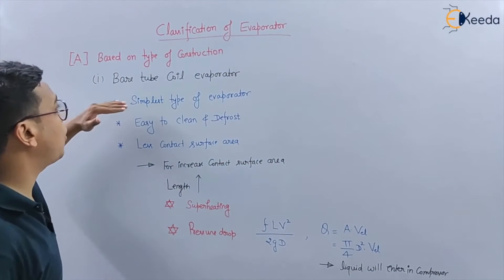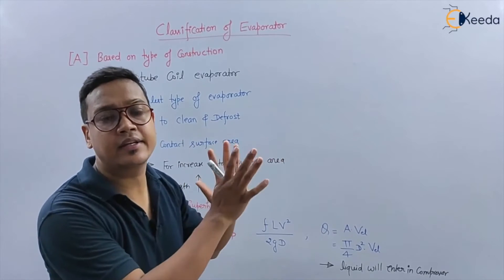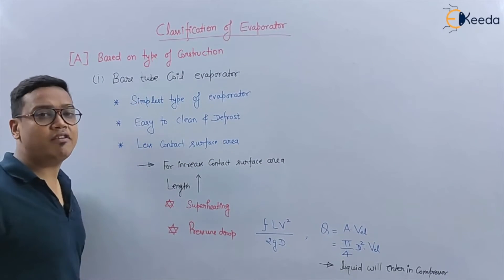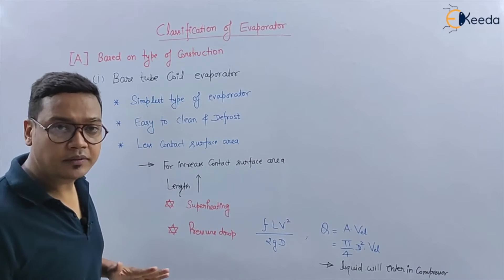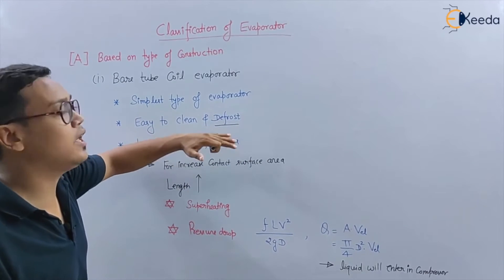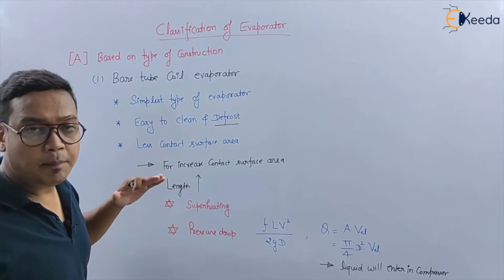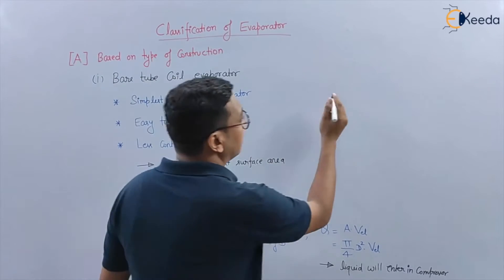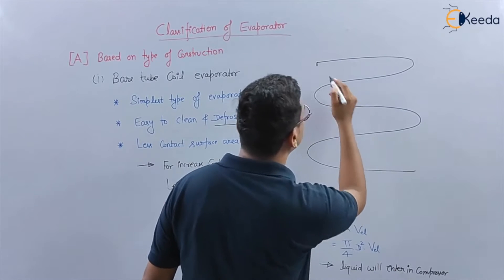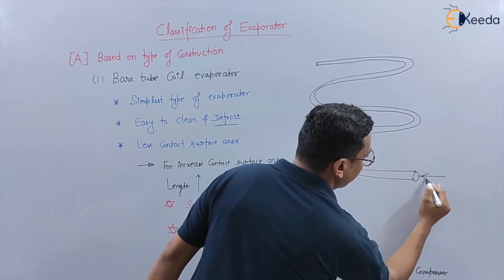Now let's see type one, based on type of construction. These categories are interlinked. First, we will see the bare tube coil evaporator. It is the simplest type of evaporator — easy to clean and defrost, which makes it a defrost type evaporator. It has less contact surface area. The coil arrangement forms the evaporator, with liquid refrigerant entering at one end.